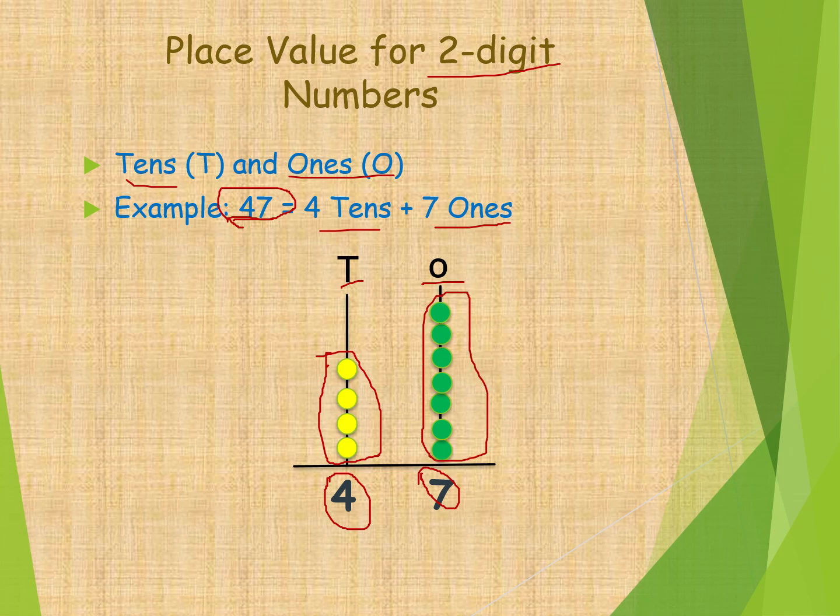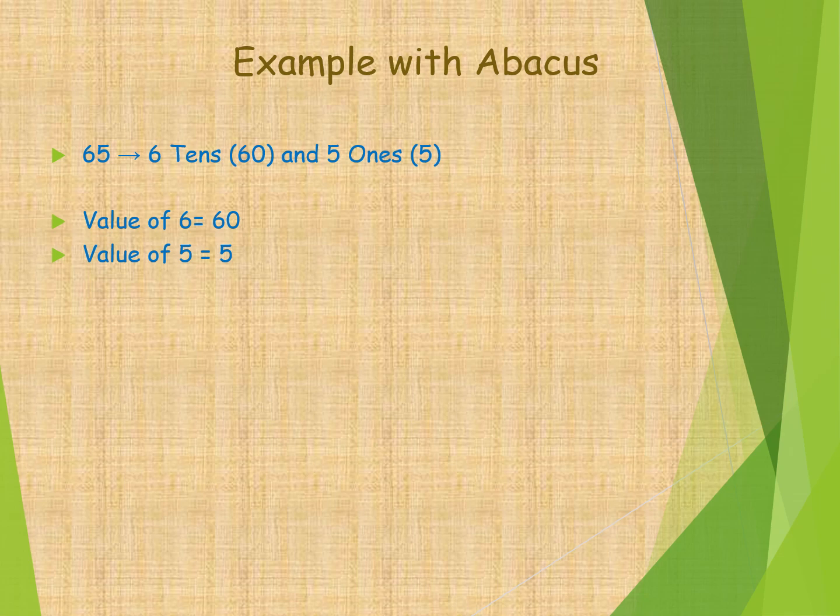Next, here's another example with abacus. Here is the 65 number, means six tens and five ones, that becomes 65. The value of six is 60, means six in tens place. Value of five is five, means five in ones place. How it came 60? Here six into 10 equals 60. How five came? Five into one equals 5. Here is the abacus example.